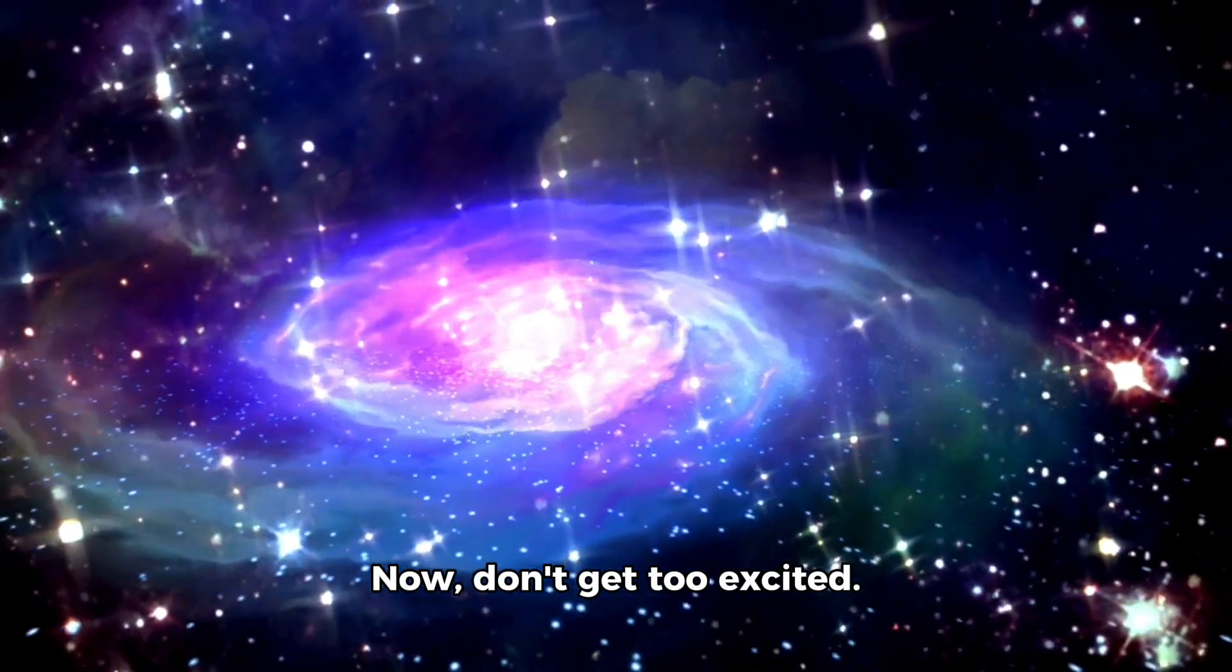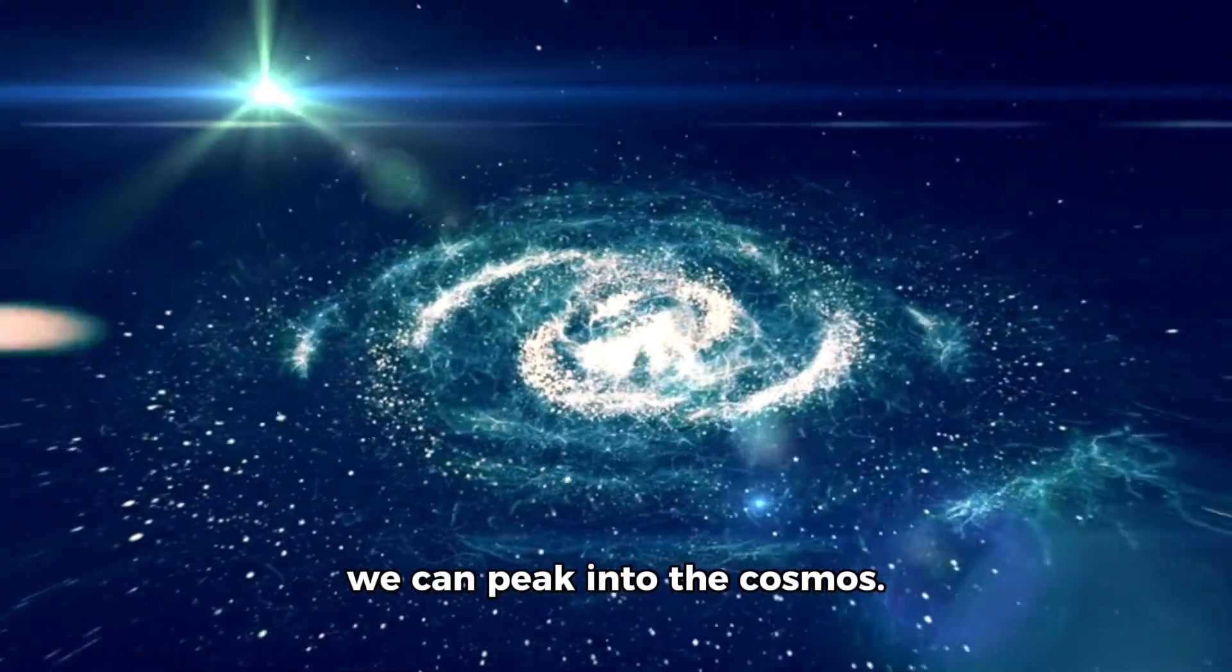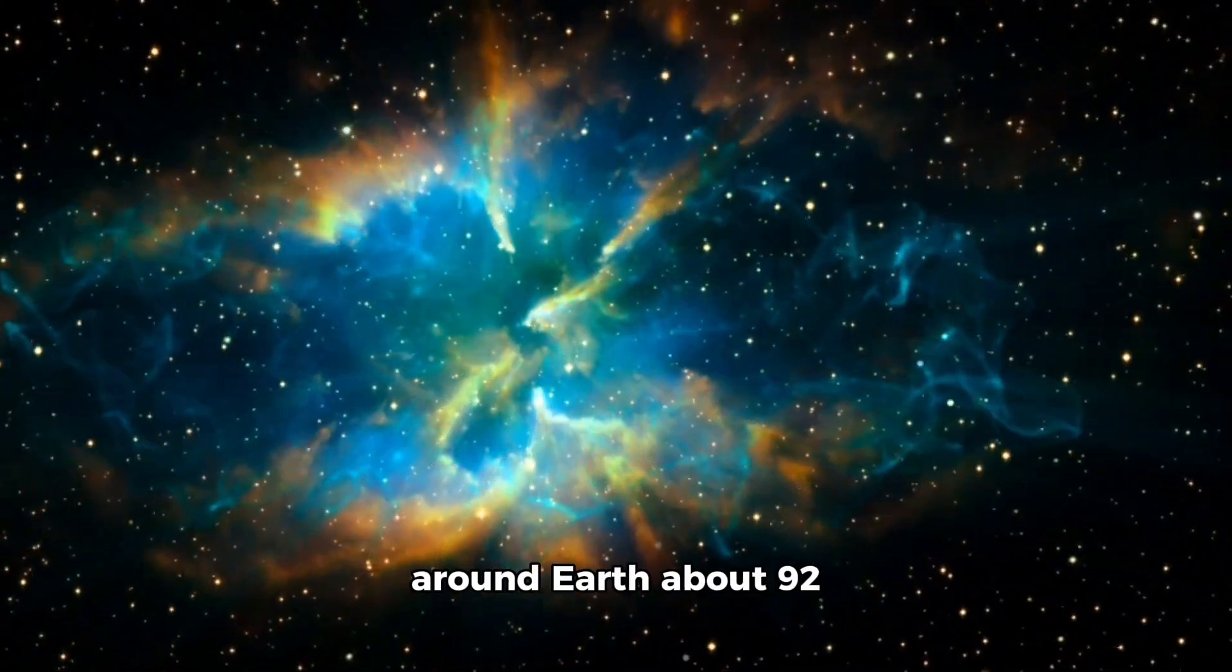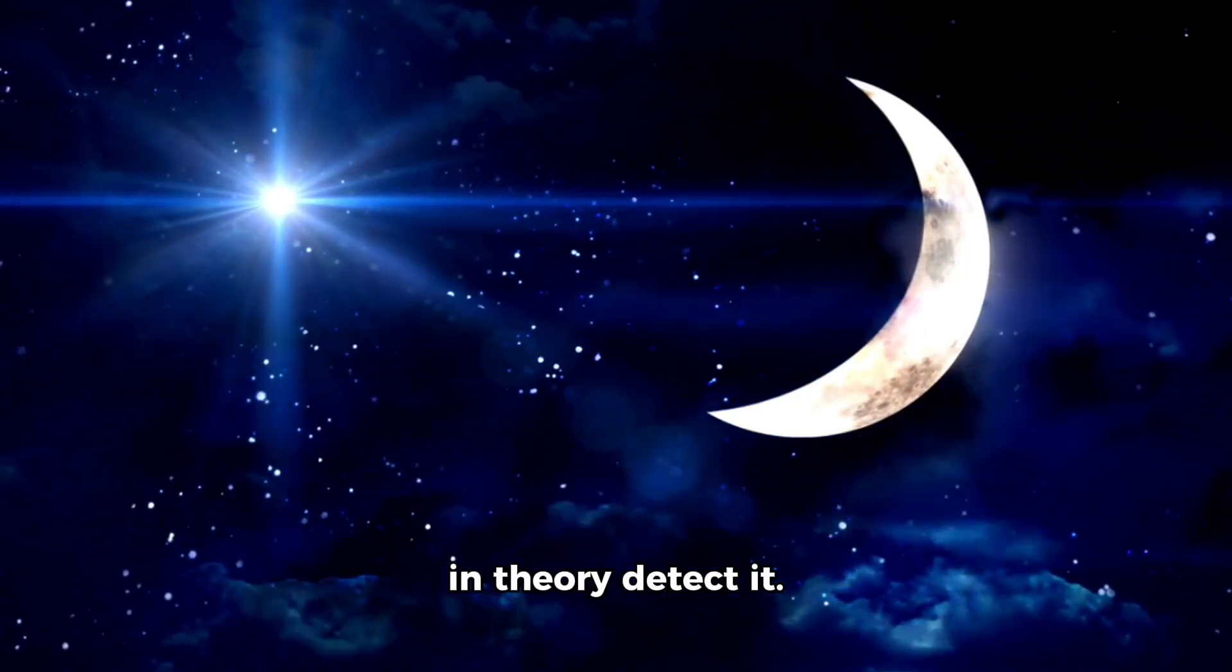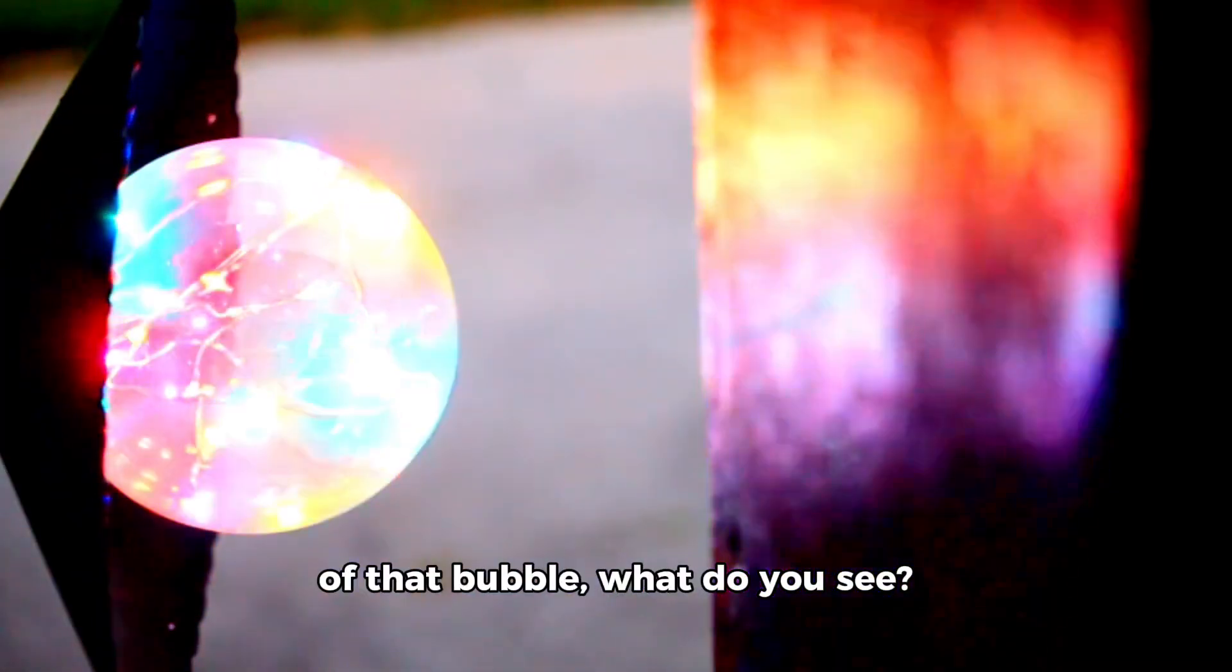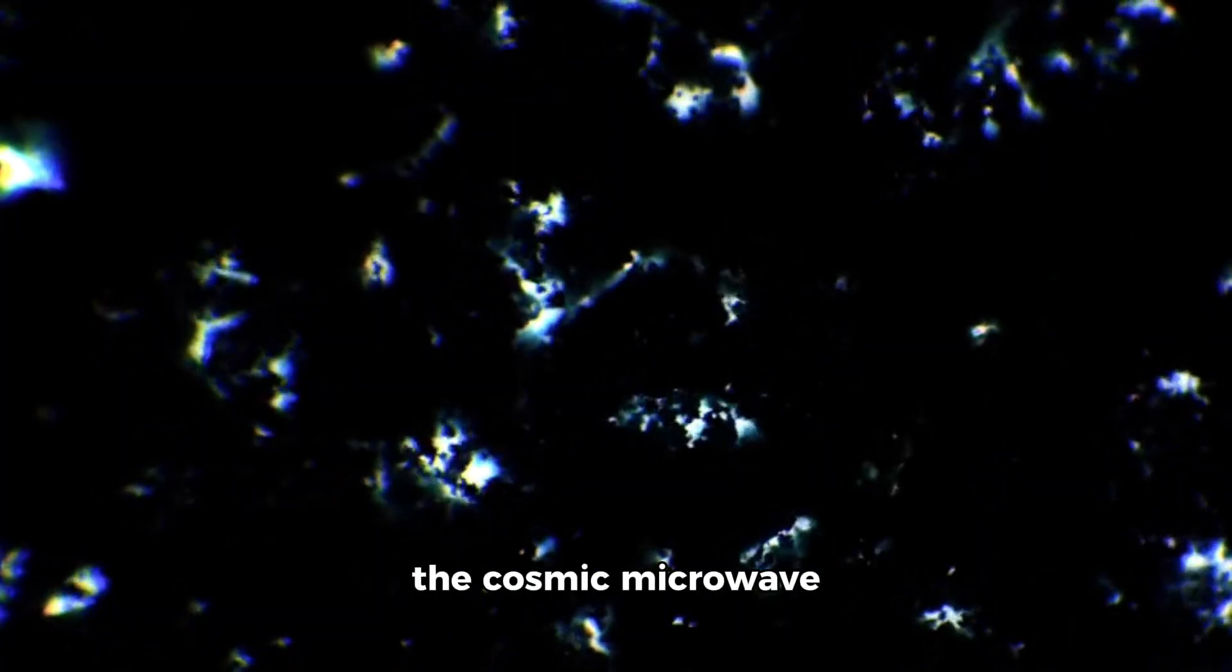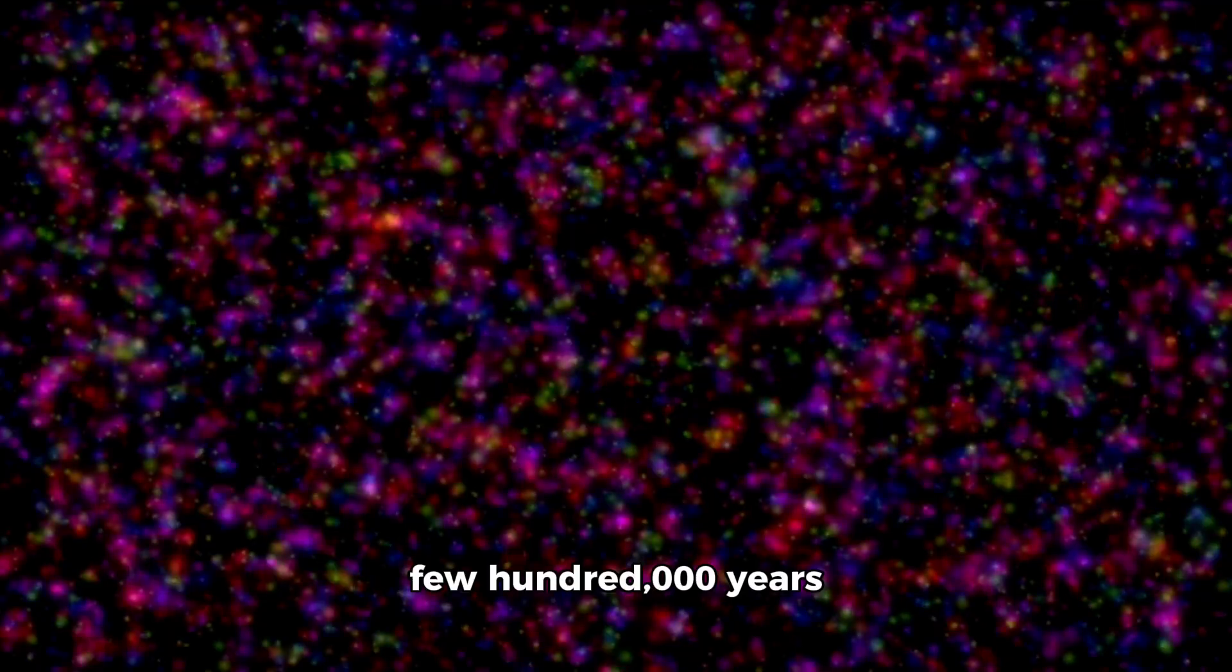Now, don't get too excited. We can't see forever. There is a boundary to how far we can peek into the cosmos. And that's what scientists call the observable universe. Imagine a giant bubble around Earth about 92 billion light years wide. Anything inside, we can in theory detect. Anything beyond, that's where things vanish into the cosmic unknown. And if you look right to the edge of that bubble, what do you see? Not stars, not galaxies, but a faint glow called the Cosmic Microwave Background Radiation. It's like the universe's baby photo, a snapshot from just a few hundred thousand years after the Big Bang.